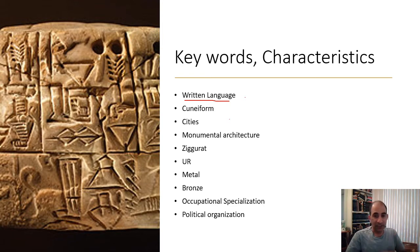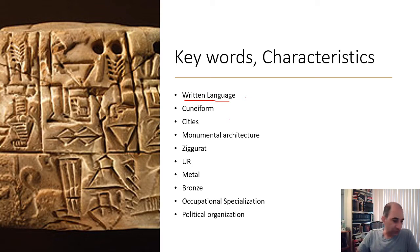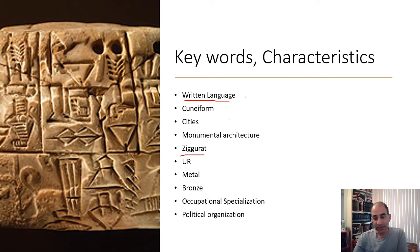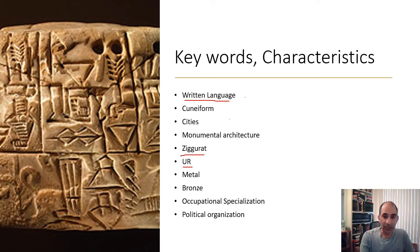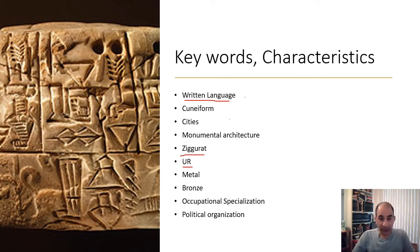The third characteristic is monumental architecture — building something big. There are many examples throughout history, from the Colosseum to the Pyramids. One I'm going to show you is called the Ziggurat. It's a massive example of monumental architecture in what is modern-day Iraq, in a city called Ur. The fourth characteristic is metal.